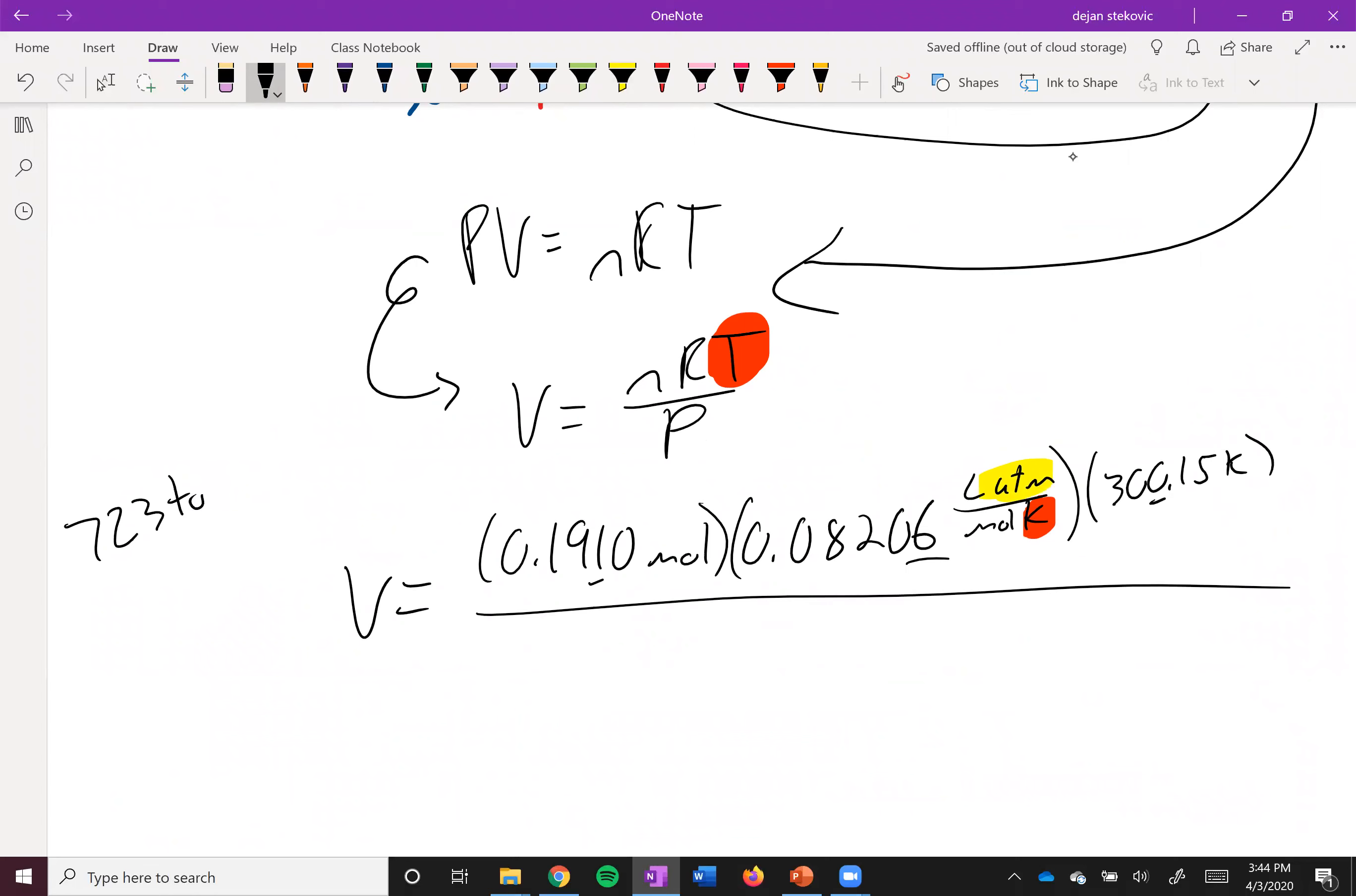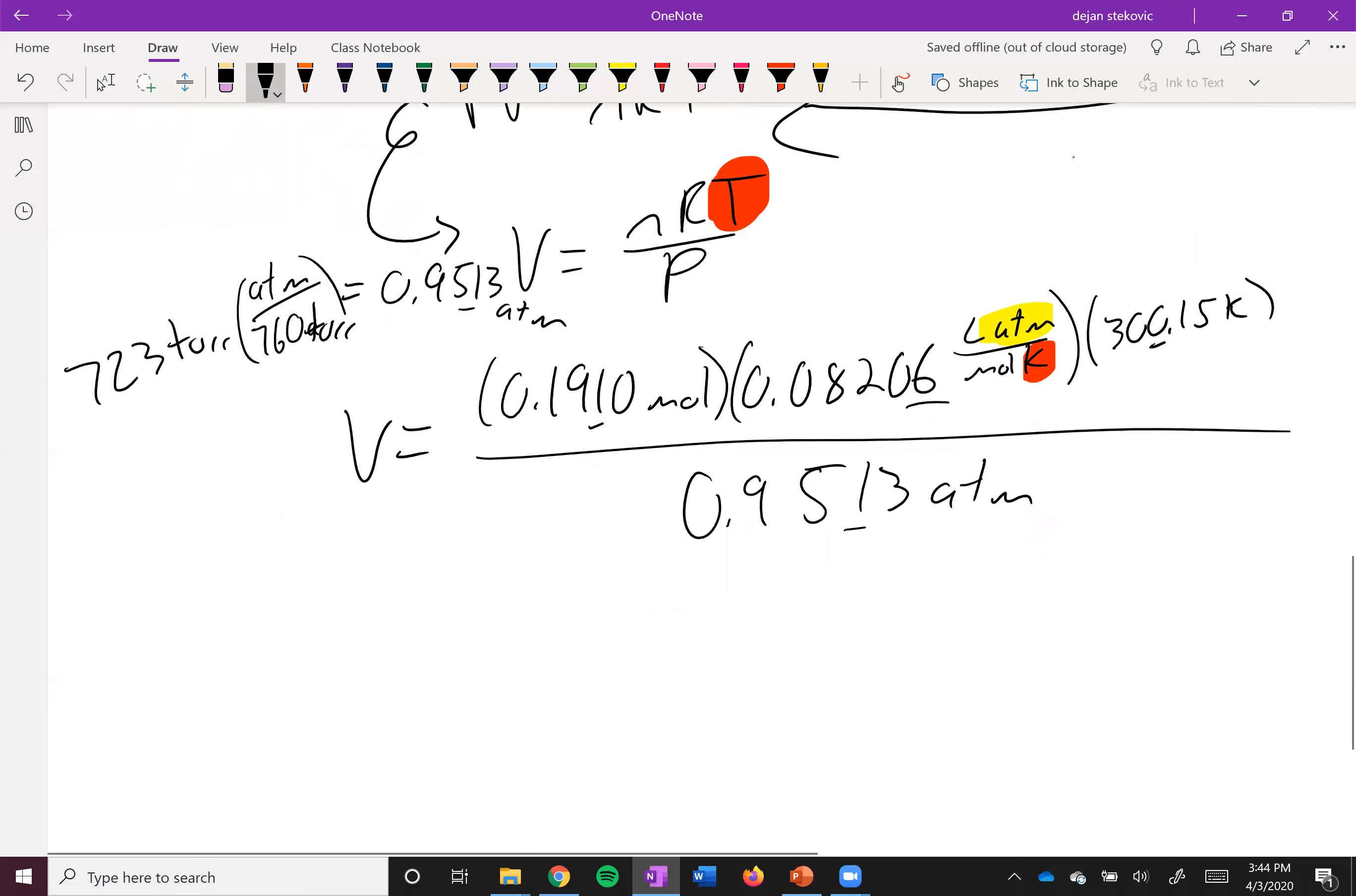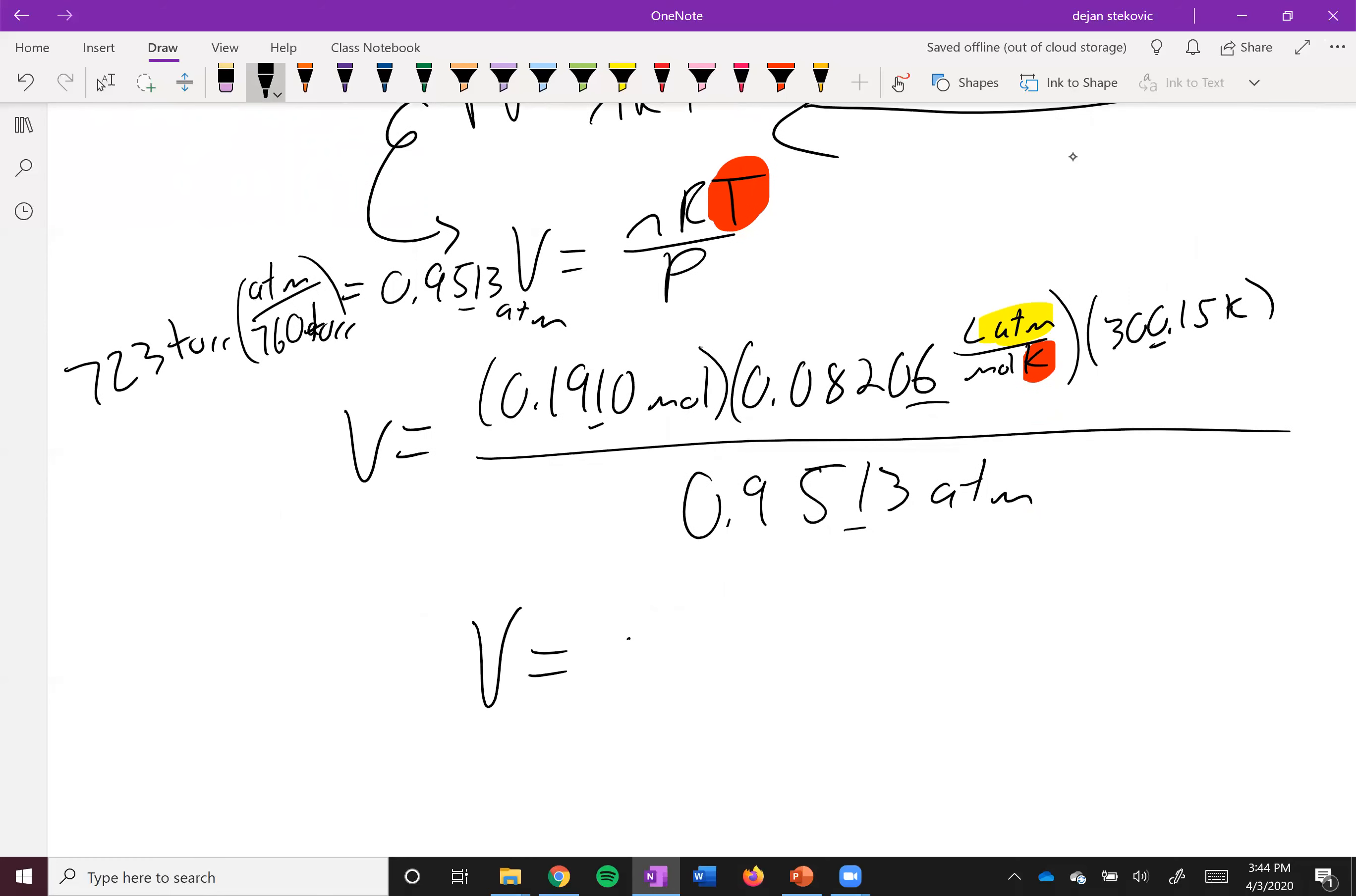723 Torr. 760 Torr in an atmosphere. And so you get 0.9513 atmospheres. Plug that in down here. Plug and chug your way through. You get 4.94 liters.